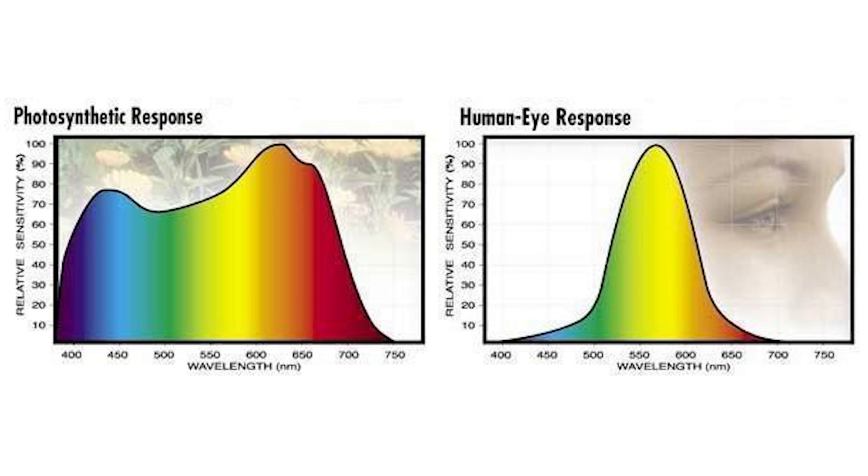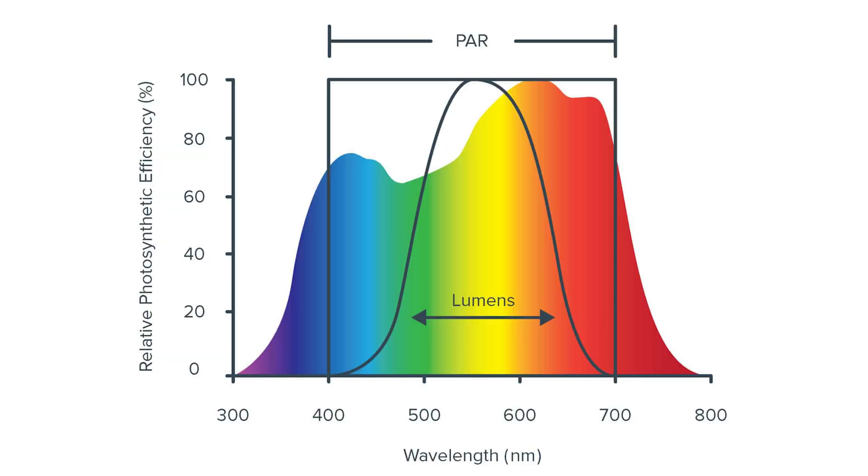You can use light meters to get a general idea of how much light intensity is hitting your plant, but they're not going to tell you the PAR — the photosynthetically active radiation. So let me break that down for you.